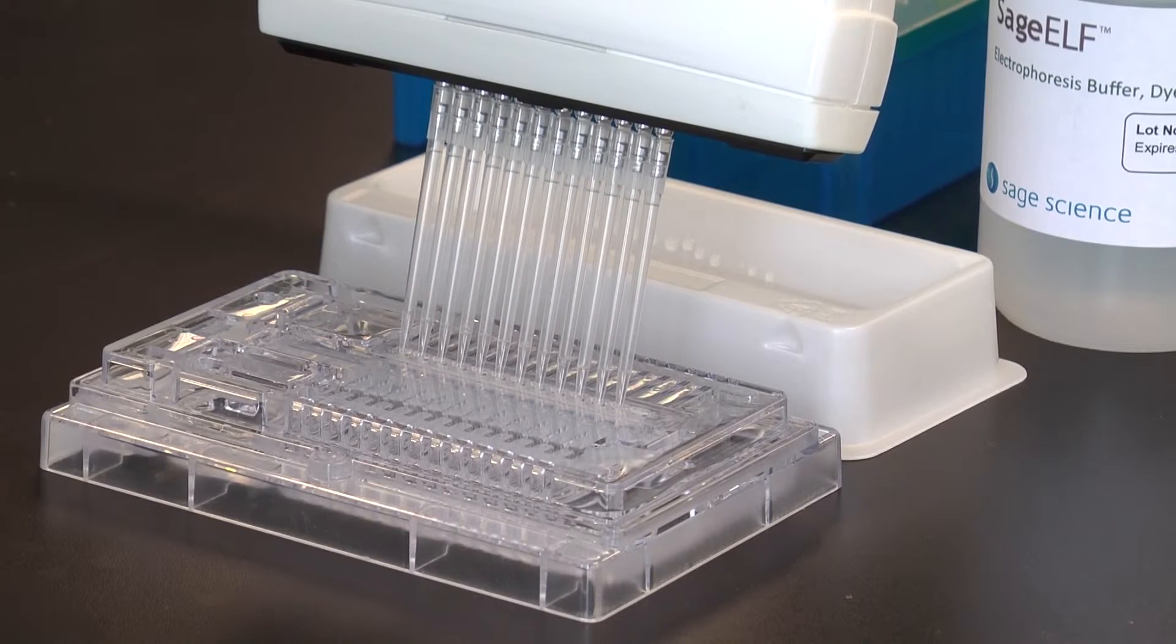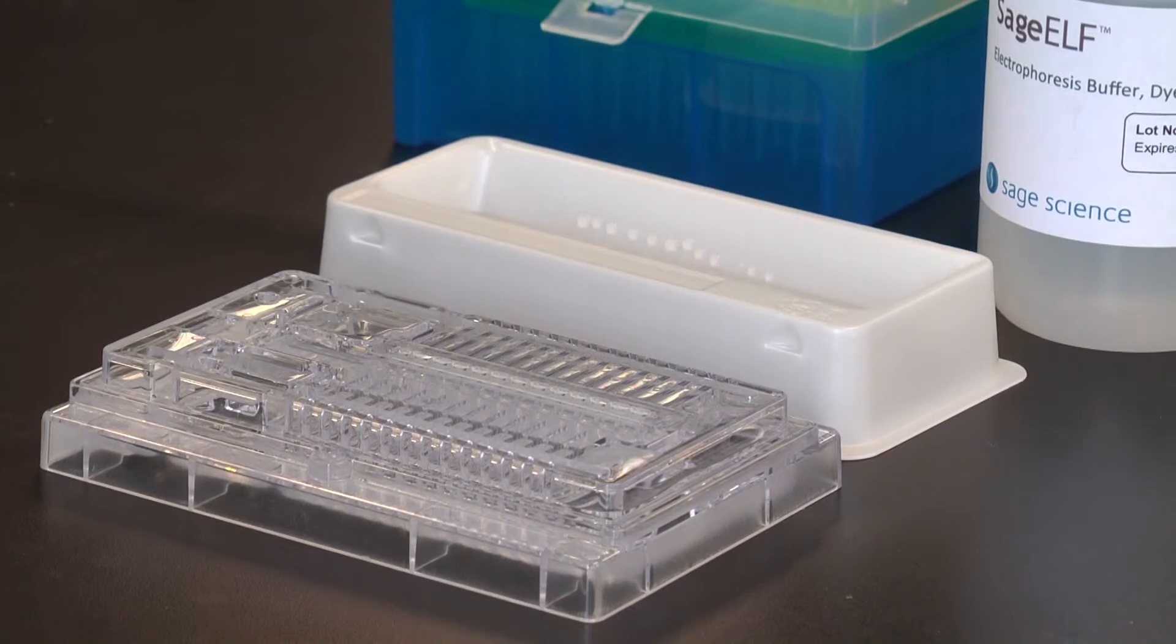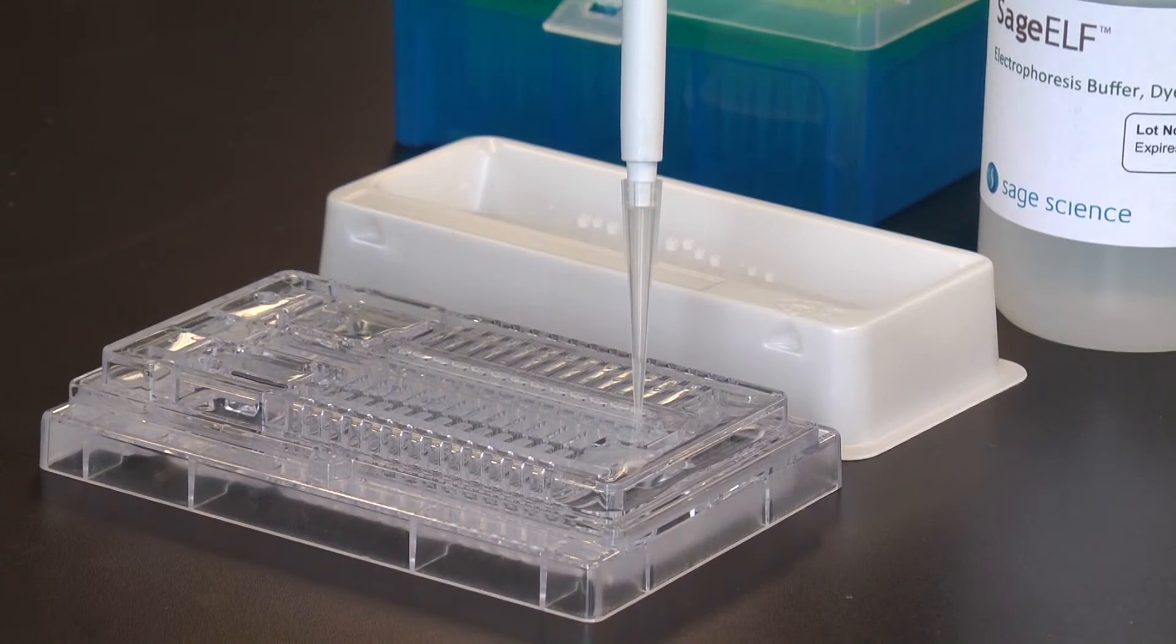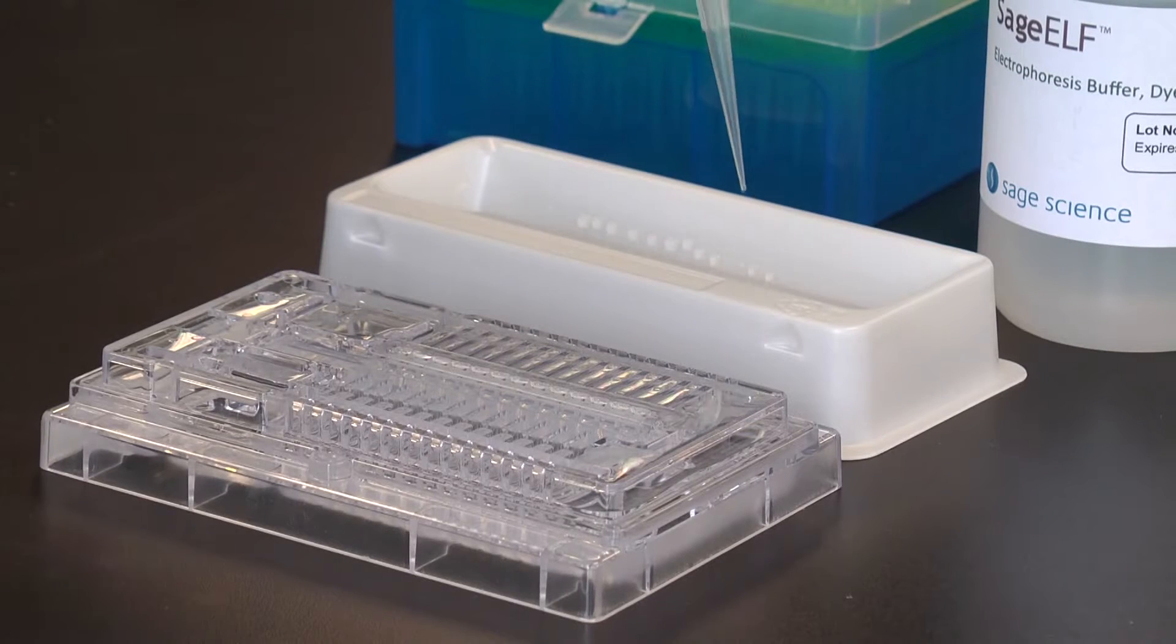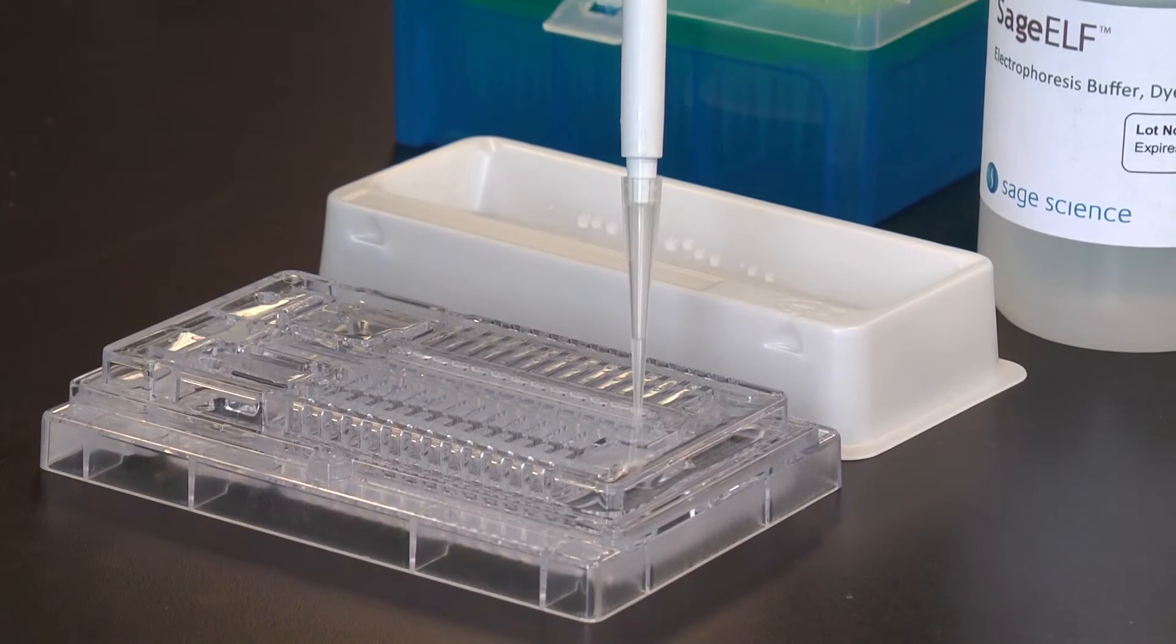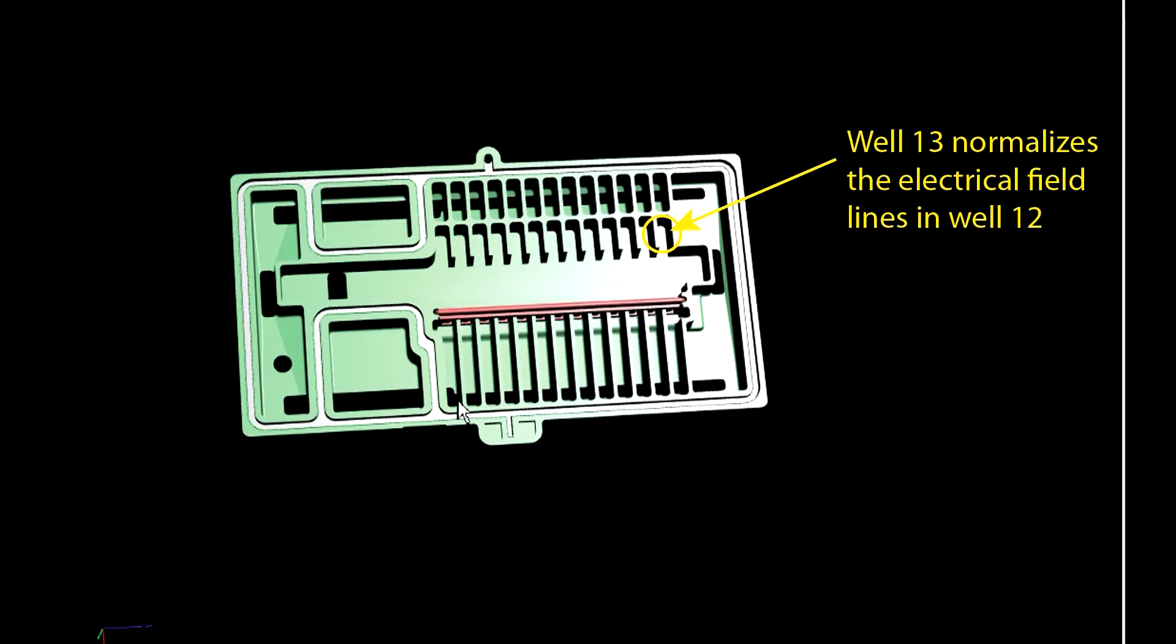Use a P100 pipette to replace the buffer in the final thirteenth well. This well is included in order to maintain the proper field strength in well number twelve. It may be used to collect an additional fraction, but it is not accounted for in the software calibration.